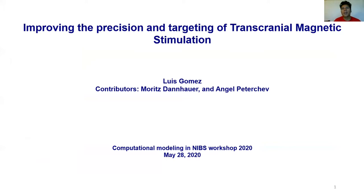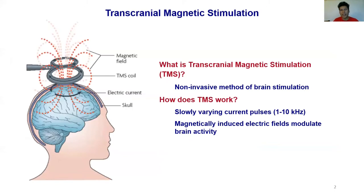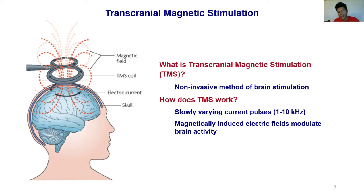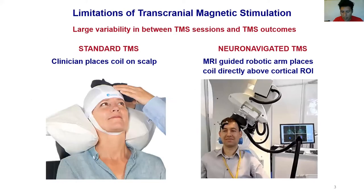We've developed a computational technique for determining how to place and orient TMS coils to improve its targeting and precision. In TMS, you have one or more coils placed on the scalp, driven by low frequency current pulses. These coils generate a magnetic field which in turn induces an electric field in the conductive brain matter, and these electric fields modulate brain activity. Regions exposed to large electric fields are typically stimulated by TMS, and there is large variability in TMS outcomes — one important contributor is coil placement.